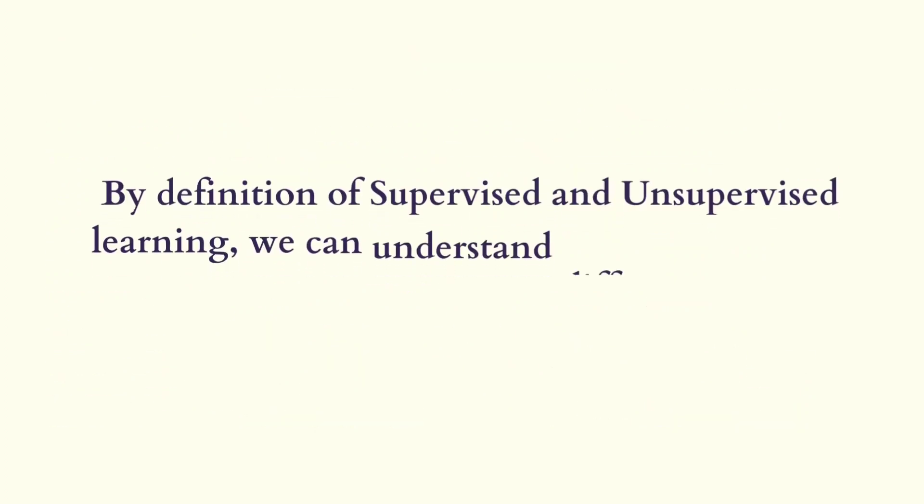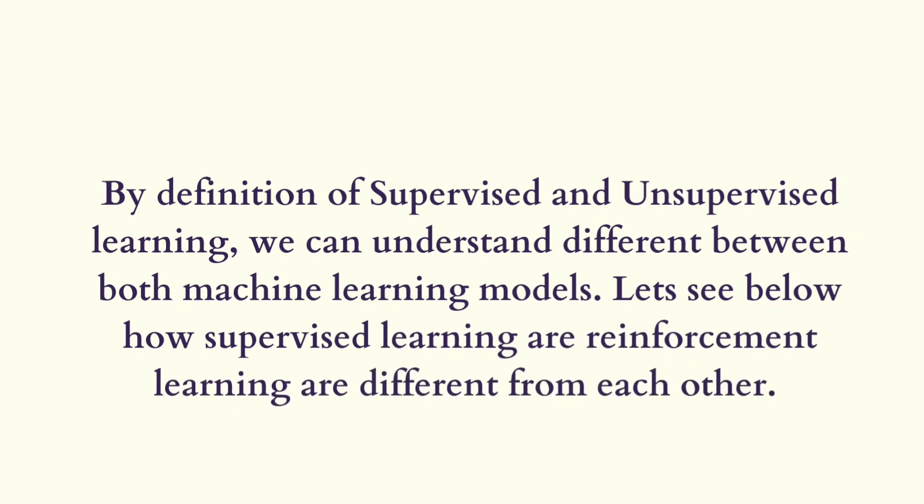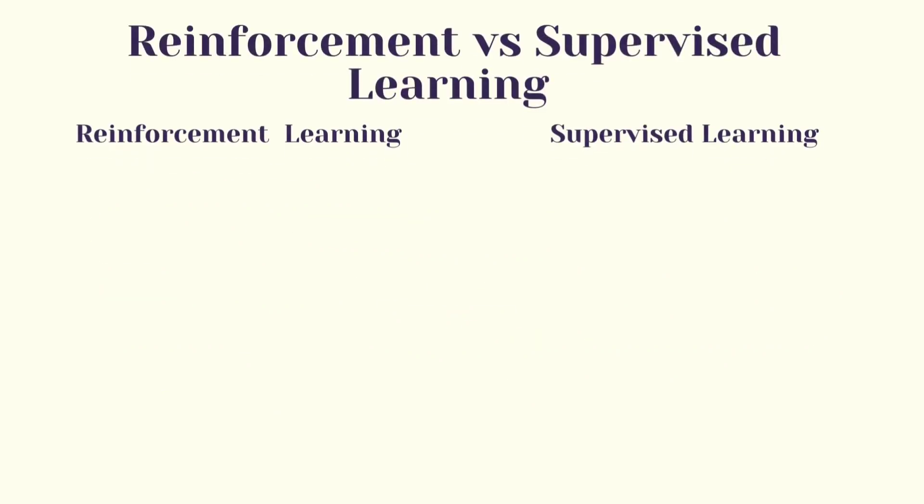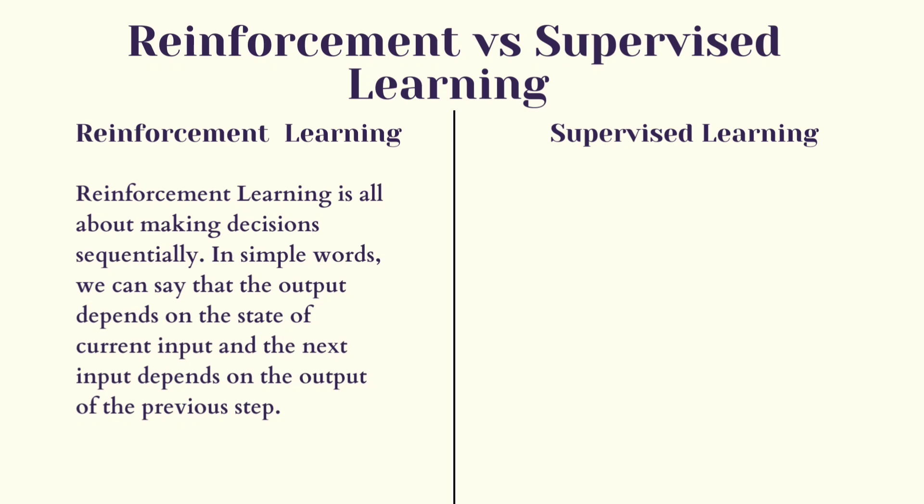By definition of supervised and unsupervised learning, we can understand the difference between both machine learning models. Let's see how supervised learning and reinforcement learning are different from each other. Reinforcement learning is all about making decisions sequentially. In simple words, we can say that the output depends on the state of the current input, and the next input depends on the output of the previous step.